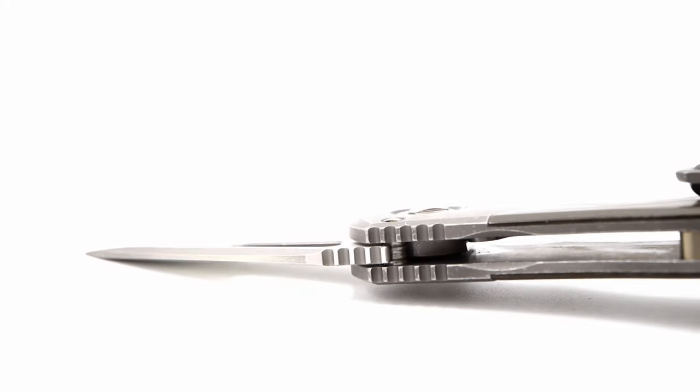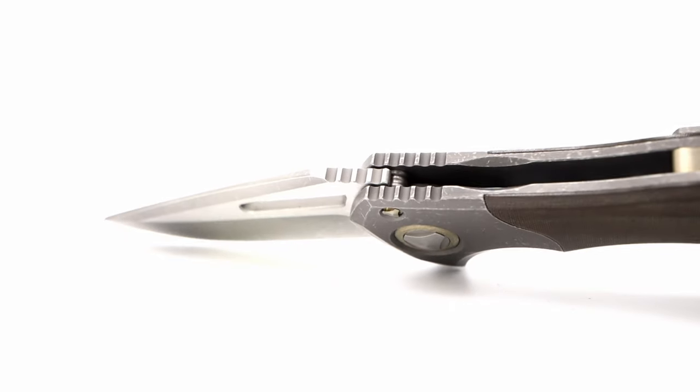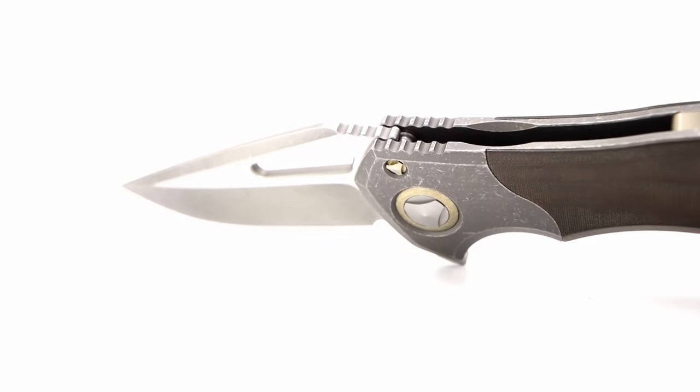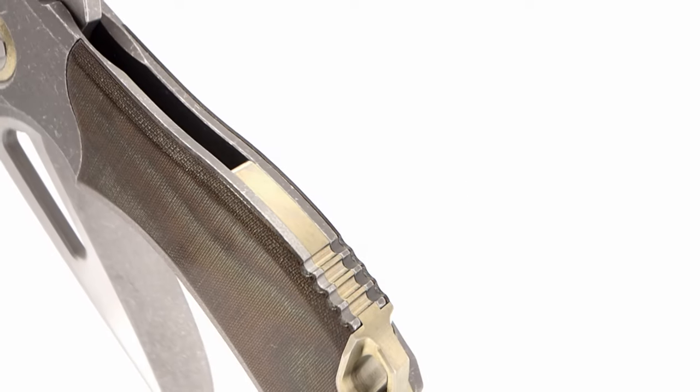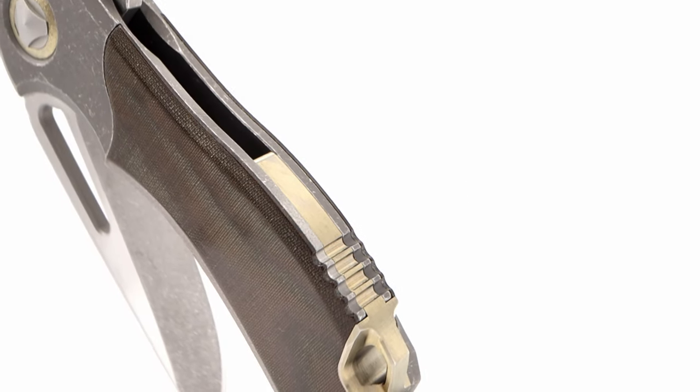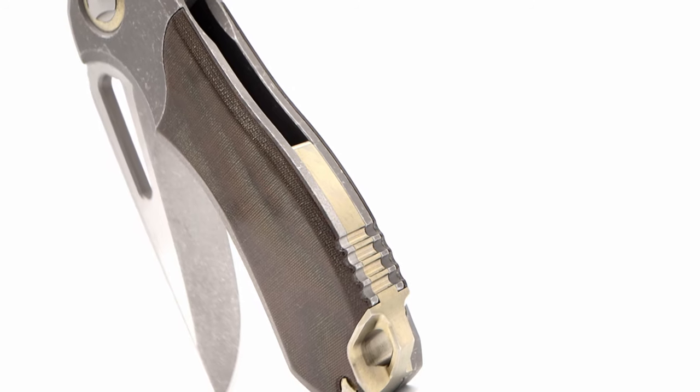There is jimping on the spine side of the bolsters, which continues in perfect unison onto the steel, stopping at the swedge. And again there is jimping at the rear of the knife milled into the backspacer, that reaches out into the frame and also into the inlays.